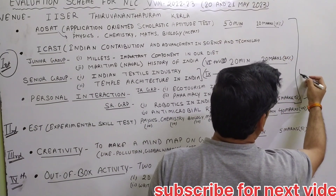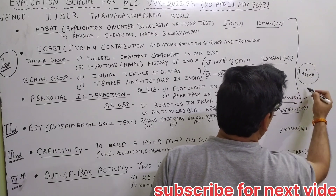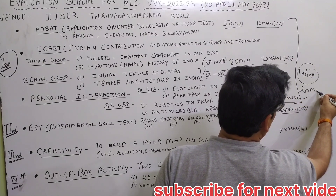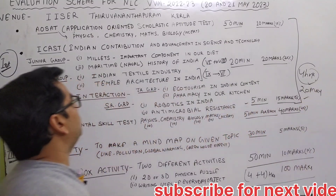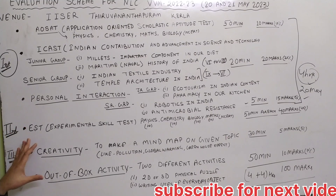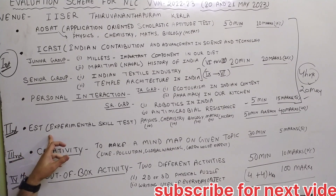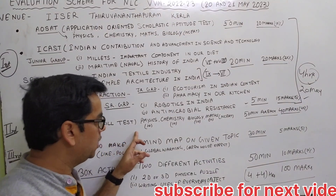The first part comprises approximately 4 hours and takes place on the first day, that is 20 May. ICAST is also conducted on this day. On the next day, the second part takes place, which is EST — the Experimental Skill Test.